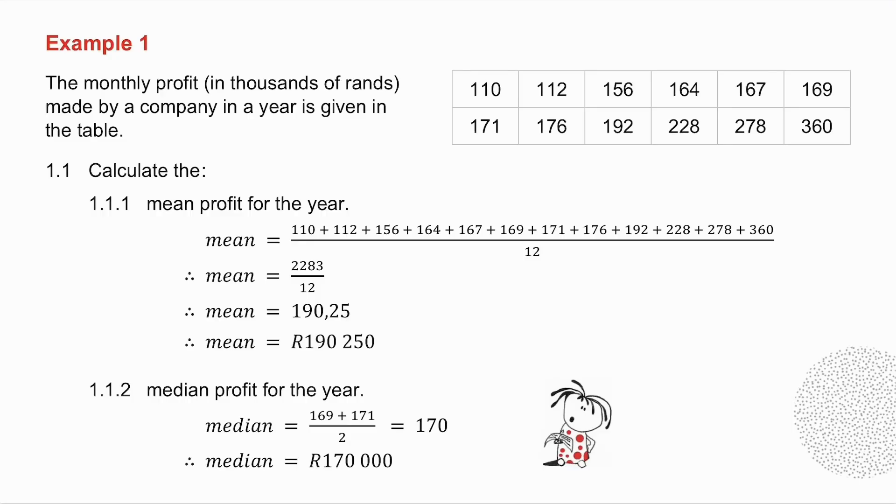Notice the monthly profit is in thousands of rands, so I need to take the mean and multiply it by a thousand. They then ask me for the median.